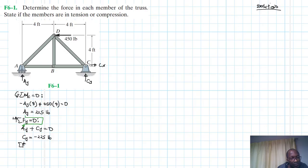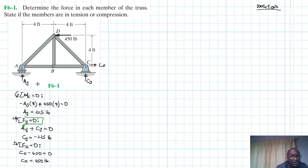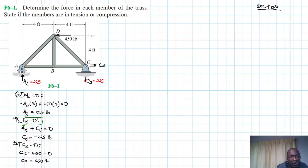Finally, summation of forces in the x direction equal to zero, with the positive direction defined. We have Cx minus 450 equal to zero, therefore Cx equals 450 pounds. So our reactions are: Ay equals 225, Cy equals 225 (direction reversed), and Cx equals 450 pounds.